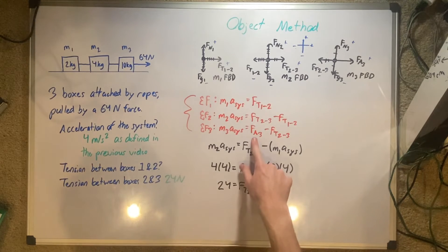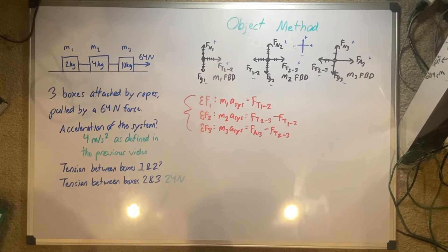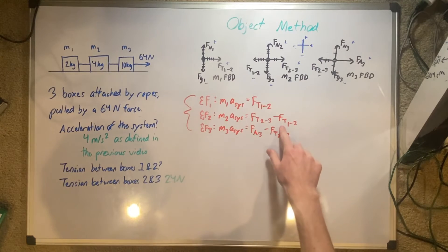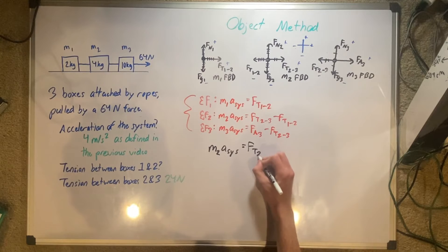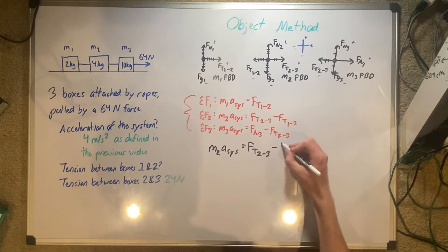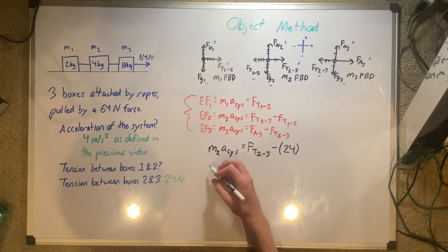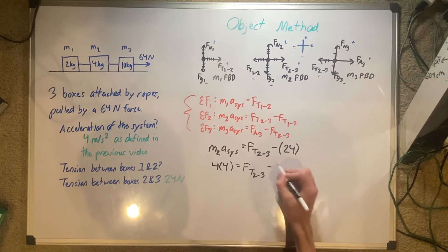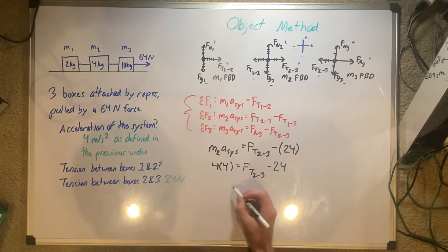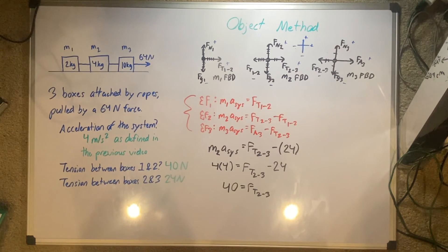Now we can do a very similar thing with this one now if we're trying to find our 1 and 2. We can erase this now because this is all figured out already. Now we're trying to find our T1 and 2. We can pull this middle equation. We have M2A system equals Ft2 to 3 minus 24 newtons, because that's what we already determined our tension is. M2 times the acceleration of the system, our M2 is 4 times 4 equals Ft2 to 3 minus 24. Add this 24 over to 16, that gives us 40. 40 equals Ft2 to 3. Our force of tension in that direction is 40 newtons.